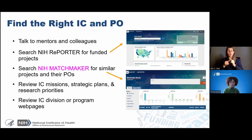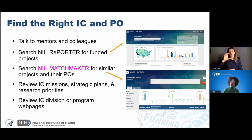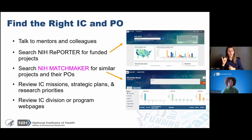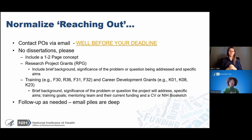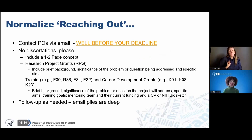There's also NIH Matchmaker — what I call the 'plenty of fish' that matches research investigators with their perfect program officer. If you type in keywords or your specific aims, you get a plethora of information: which ICs are funding research in your area, what mechanisms or activity codes are being used, and what study sections have been reviewing this work. One thing I want to reiterate: normalize reaching out. You cannot conduct a research career on your own, so make sure you are reaching out to your social networks — co-mentors, peers, and program officers at NIH.